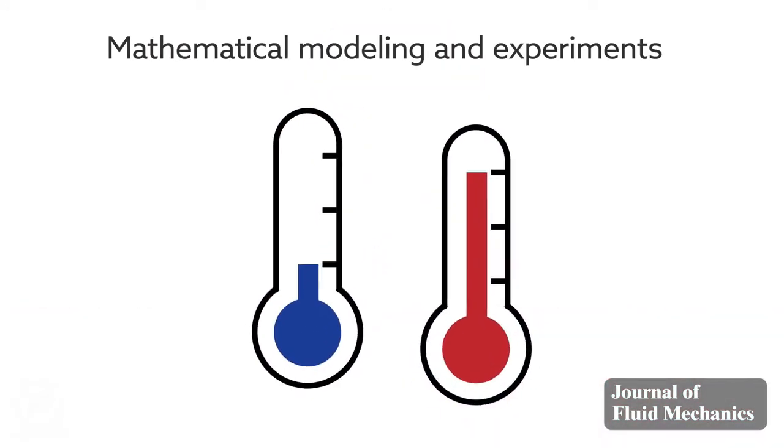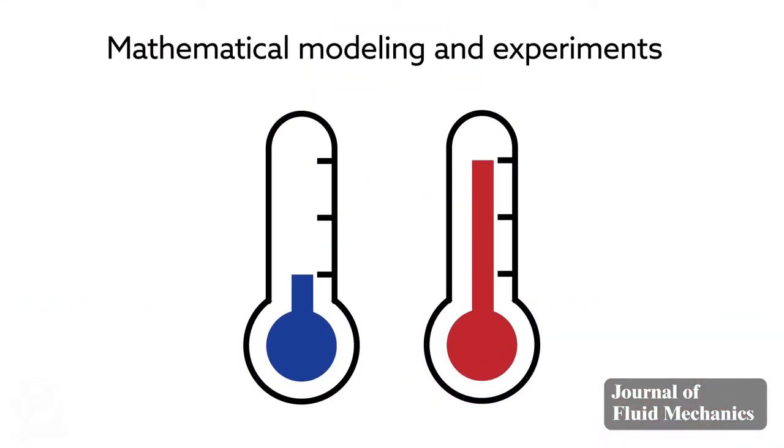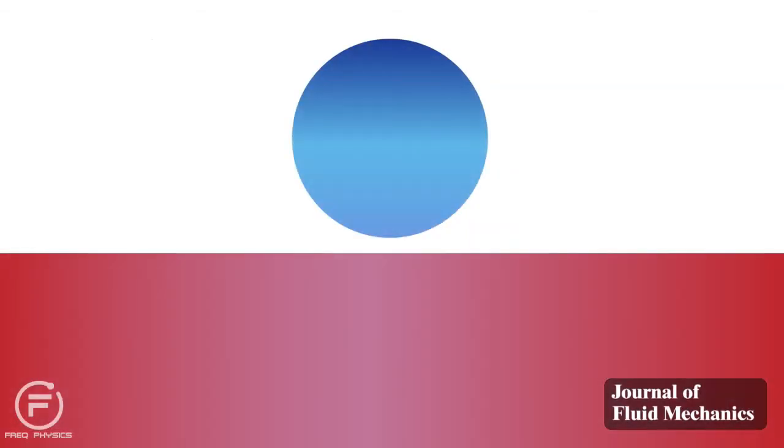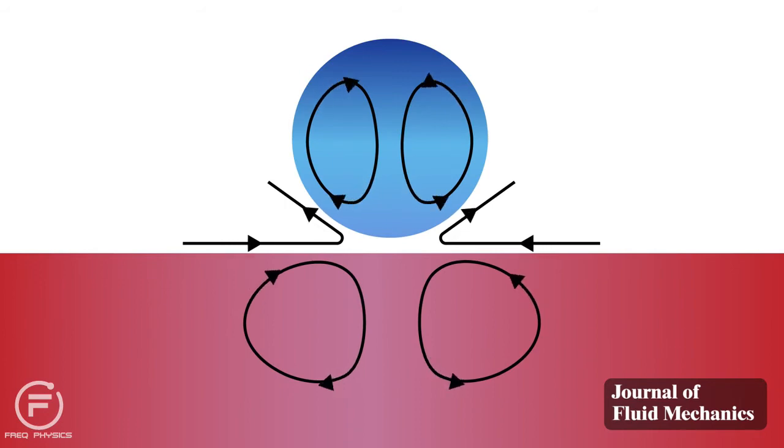A combination of mathematical modelling and experiments provided a closer look at the crucial role played by temperature. The temperature difference between a cold drop and a hot bath creates flows both in the drop and the air cushion that increase the pressure in the cushion.